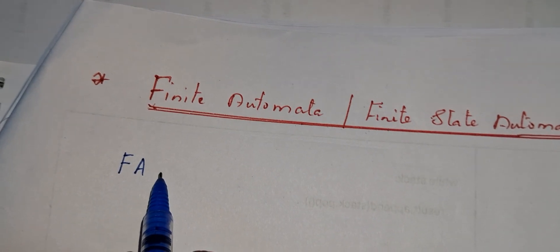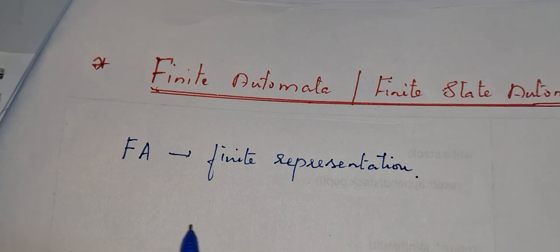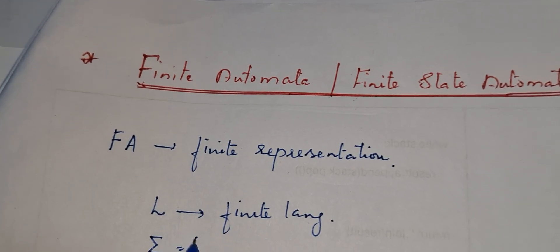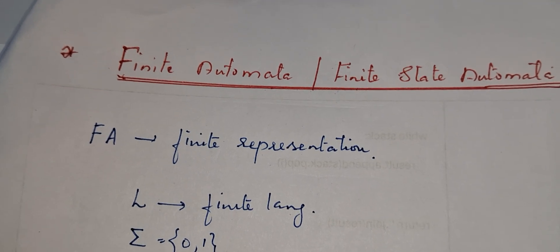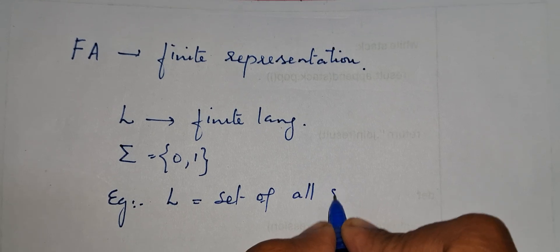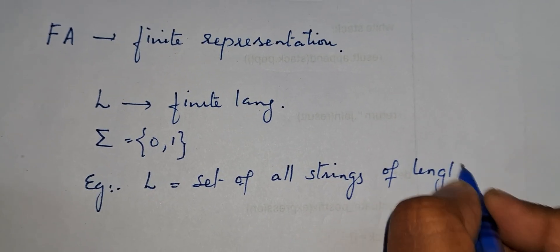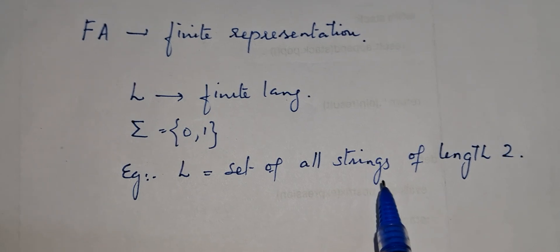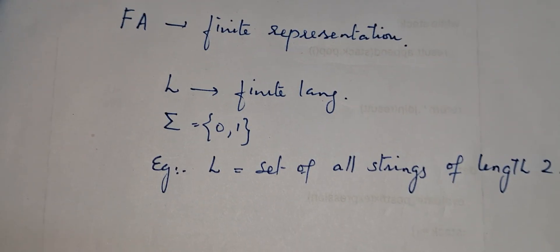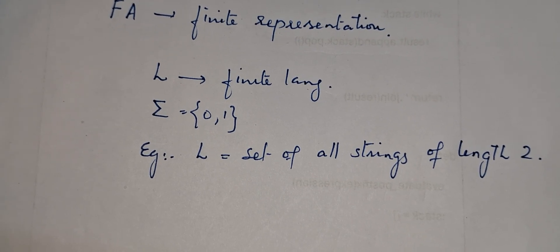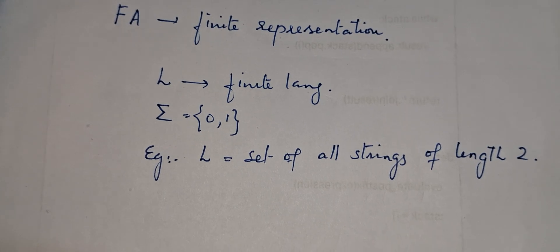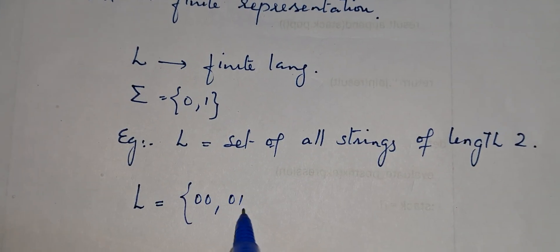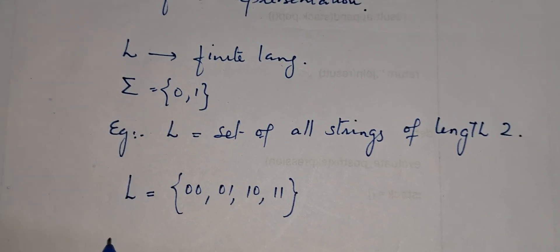Finite automata means some finite representation. Suppose there is a language L which is finite, with alphabet 0 and 1, and L is the set of all strings of length 2. This is a finite language. The possible strings are: 00, 01, 10, 11. If a language is finite, it is easy to check whether a particular string is present or not by linearly searching all the strings in the language.